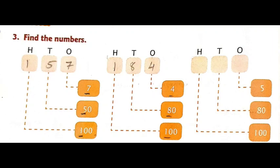Now the second question: what is the expanded number we have? 4, 80 and 100. Write 4 in ones place, 8 in tens place, and 1 in hundreds place. Similarly, you try the third sum children.